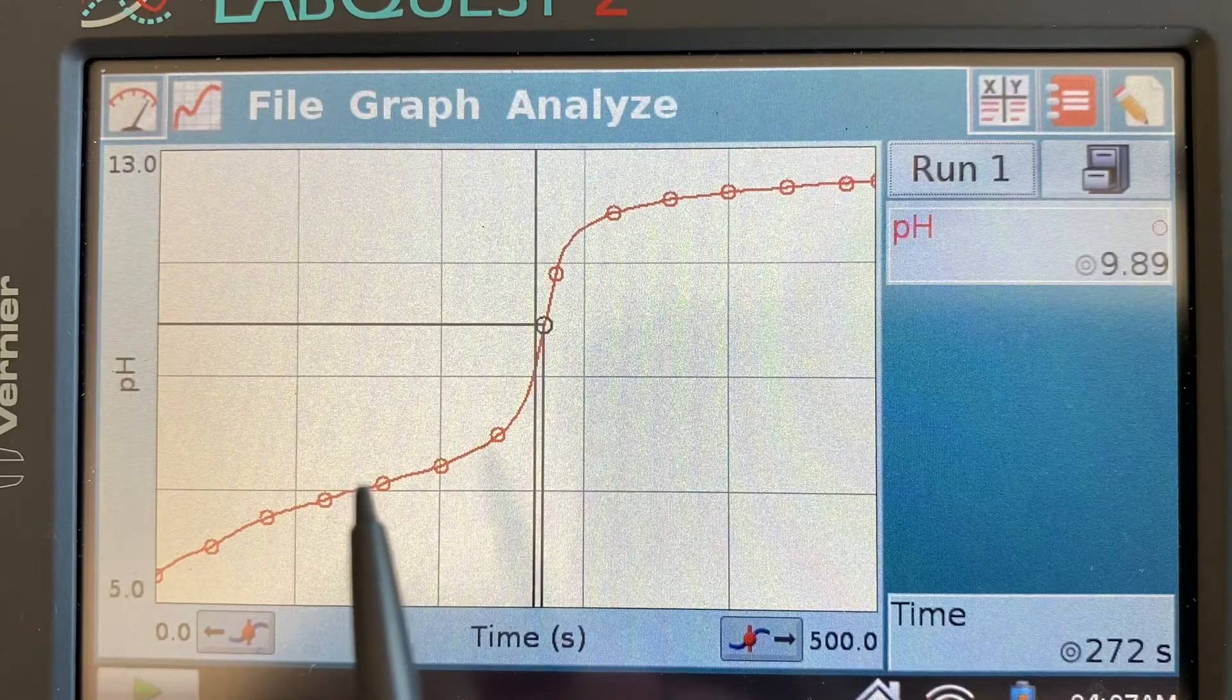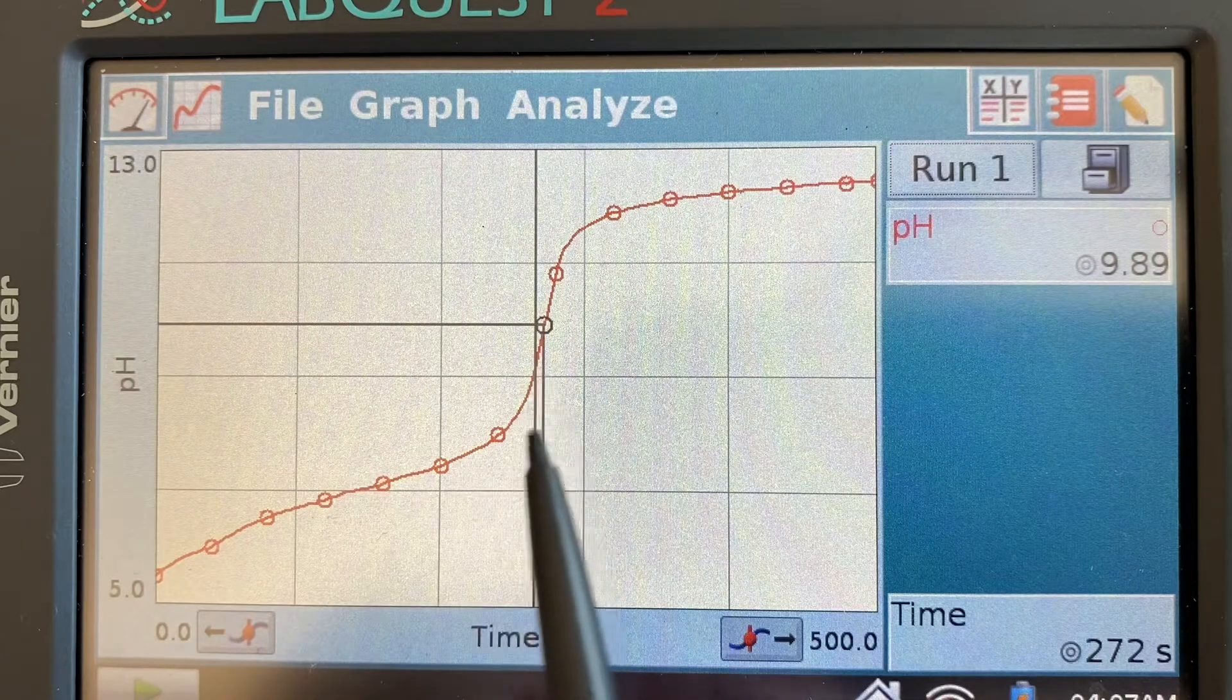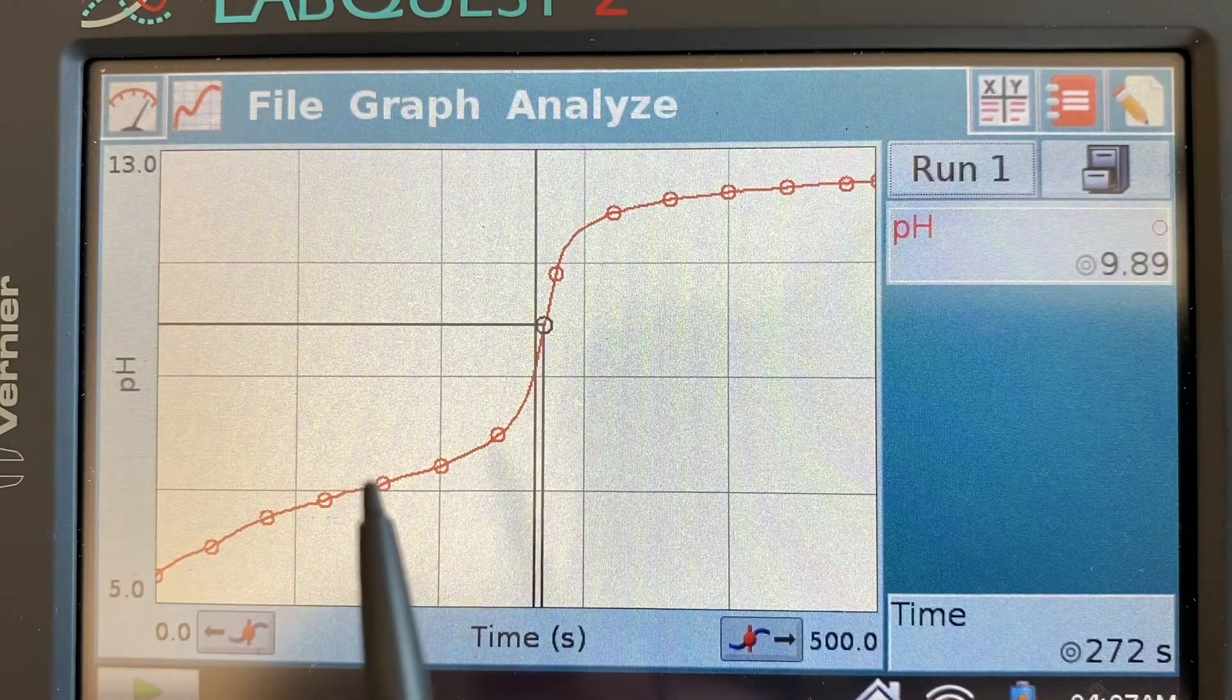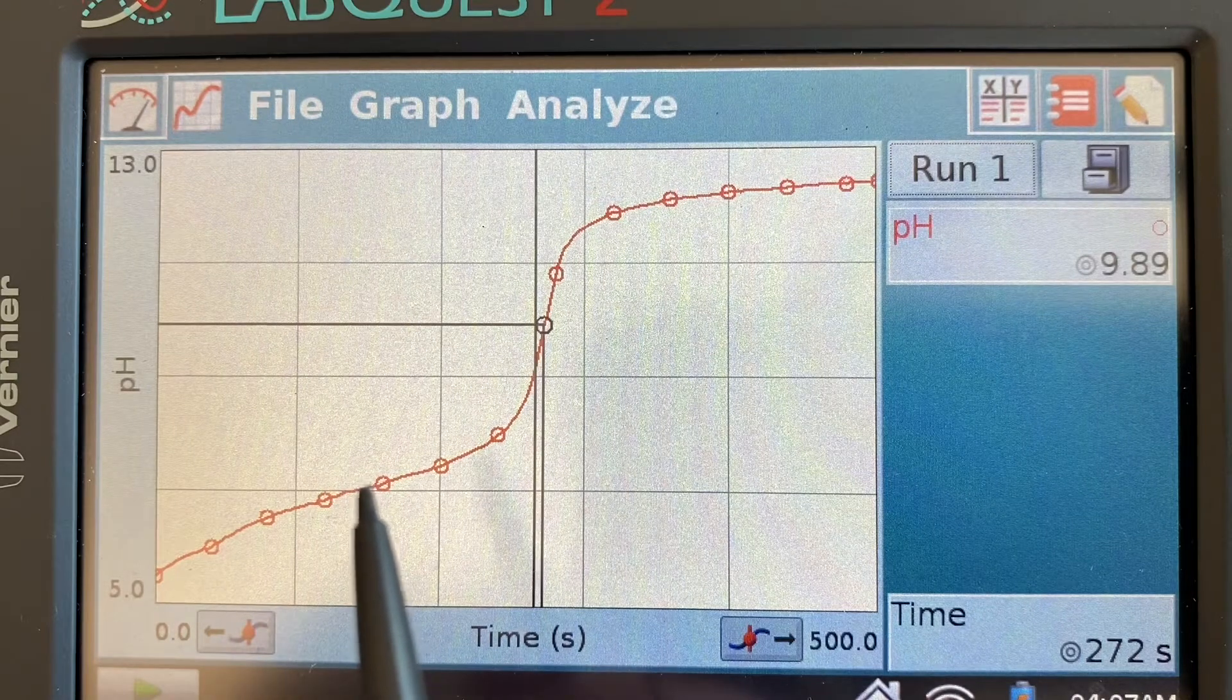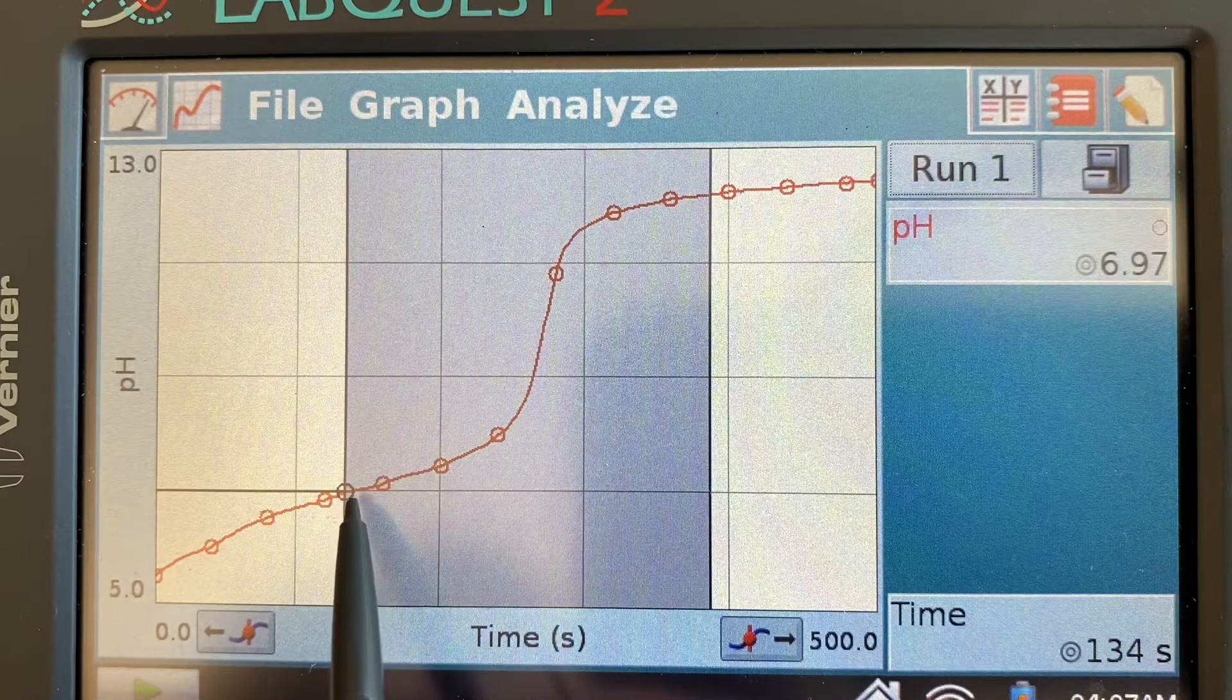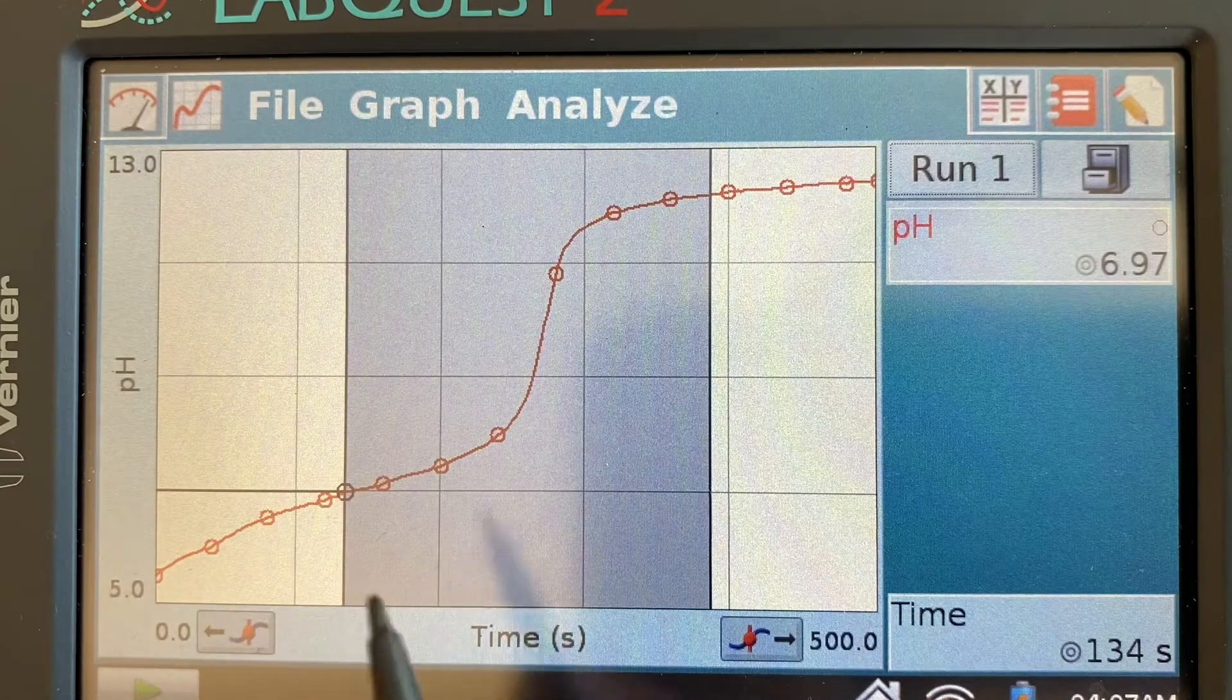All right, and so assuming my drip rate was constant the entire time then the point halfway down the line here - I'm gonna give you a quick estimate - we need the pH at the point halfway to the equivalence point.